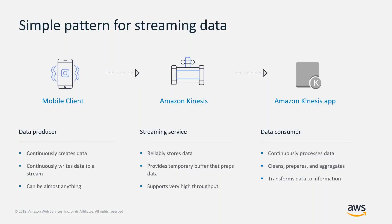There's a simple pattern to think about as we go through each partner's solutions in the real-time analytics space, especially as it relates to streaming data. There's a data producer — it continuously creates data and is the first step in the streaming or real-time analytics pipeline. It continuously writes that data to a stream. You can use a streaming service like Amazon Kinesis, which durably ingests messages at high volume, reliably stores the data, and provides a temporary buffer. Apache Kafka is another great example for this middle layer.